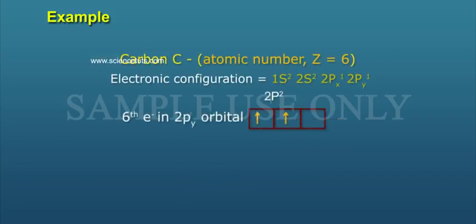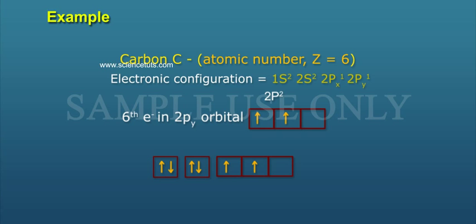Carbon C, atomic number Z equals 6. Electronic configuration equals 1s² 2s² 2px¹ 2py¹. The sixth electron enters the 2py orbital.